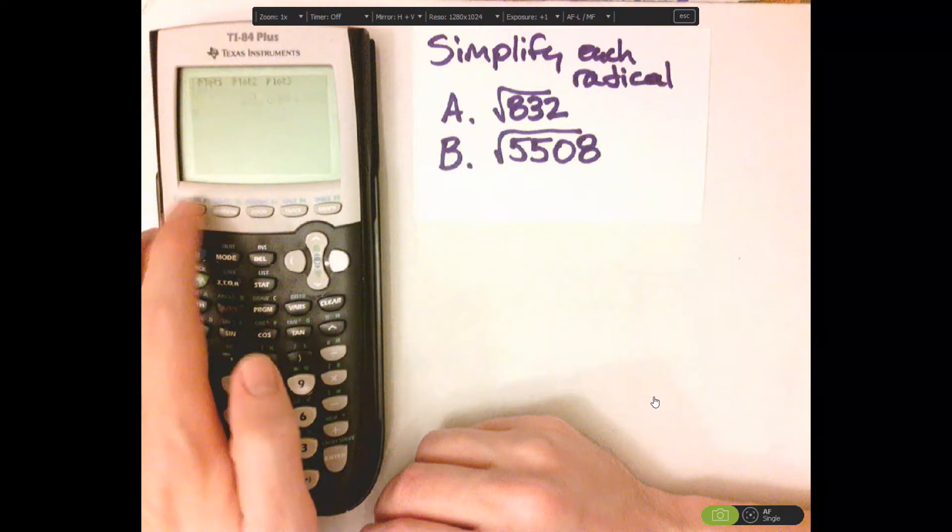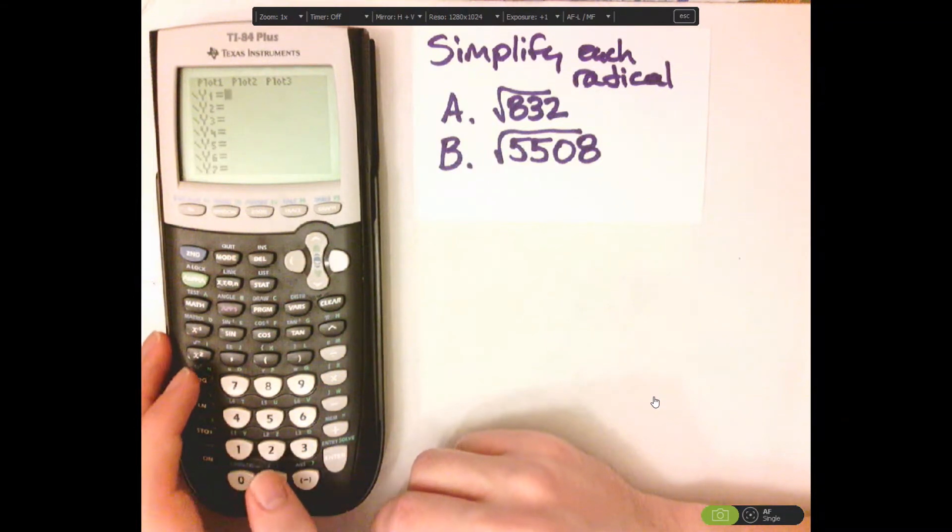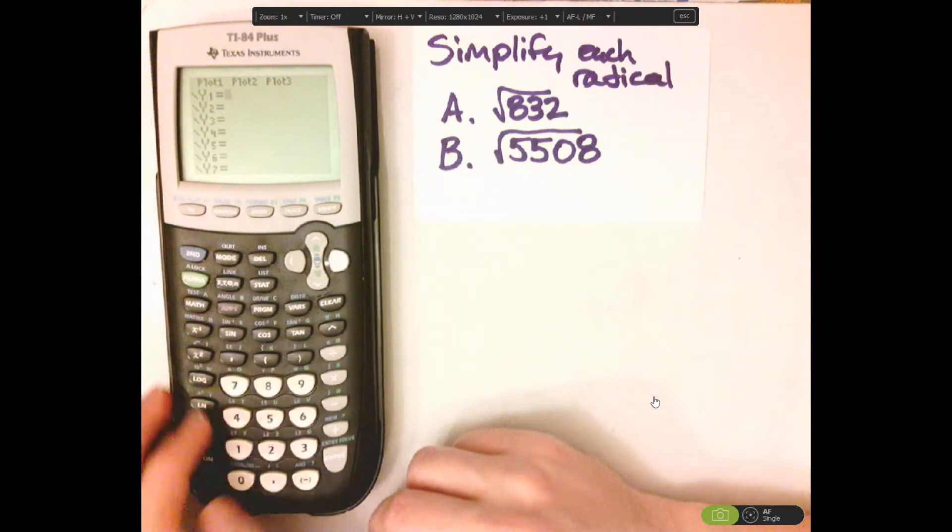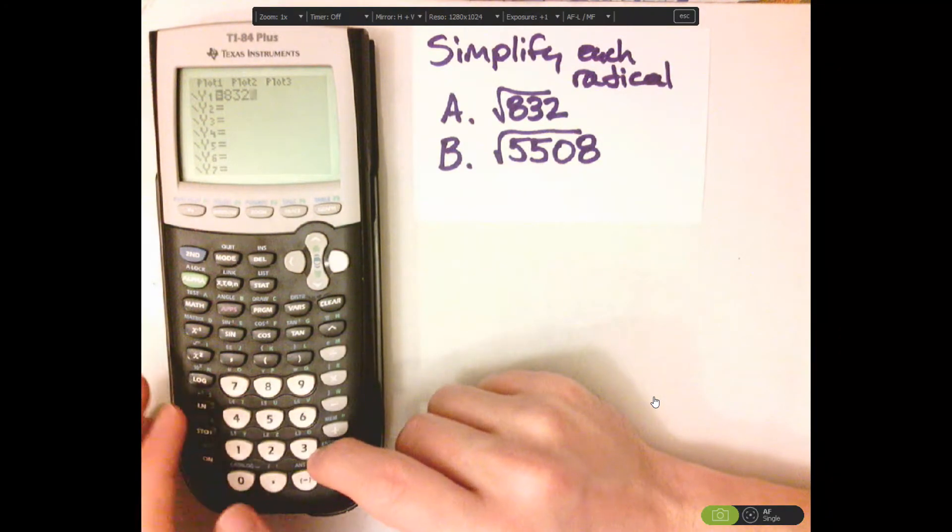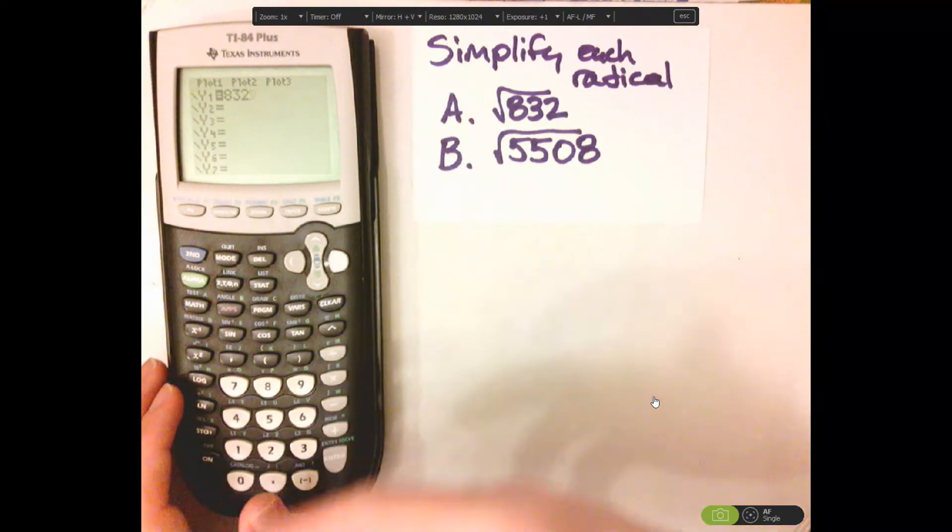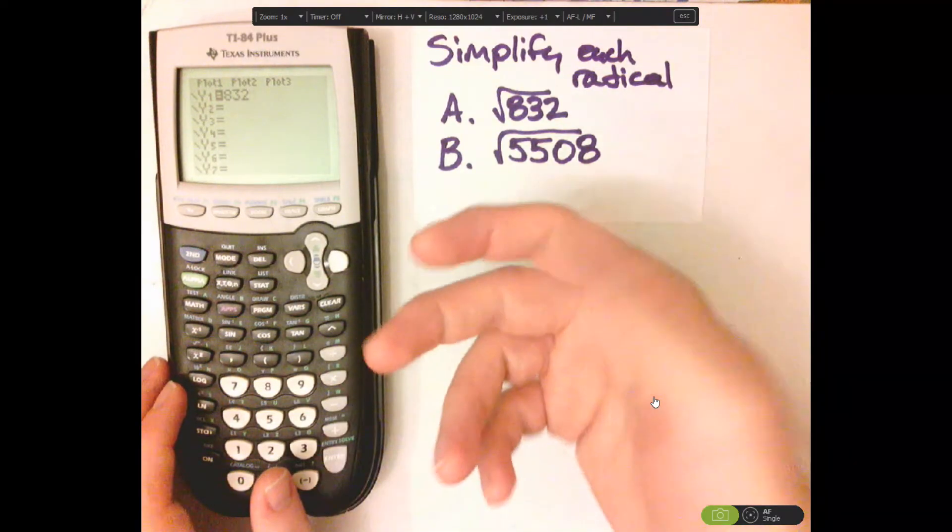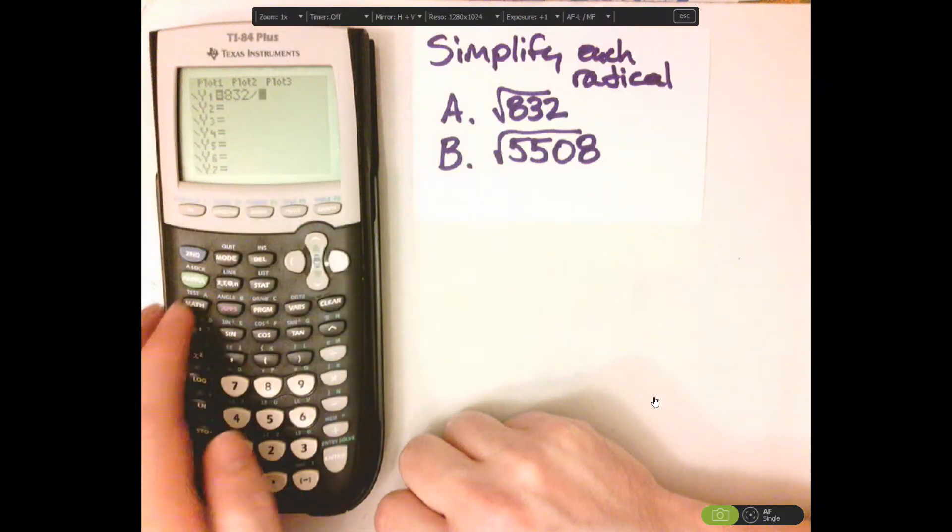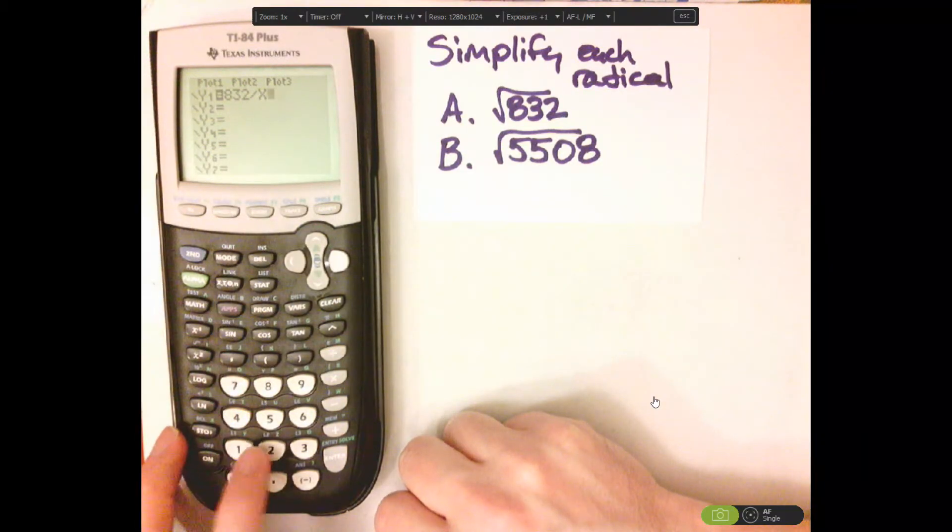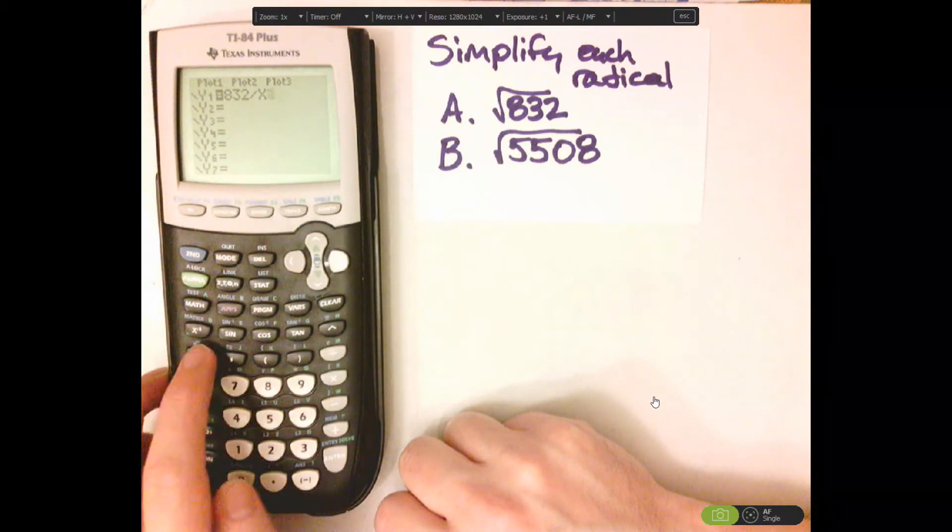Go to Y equals. Now type in 832. Now when you're doing square roots, you're looking for a pair or a square. We're going to look for a square, so I'm going to divide by x squared.